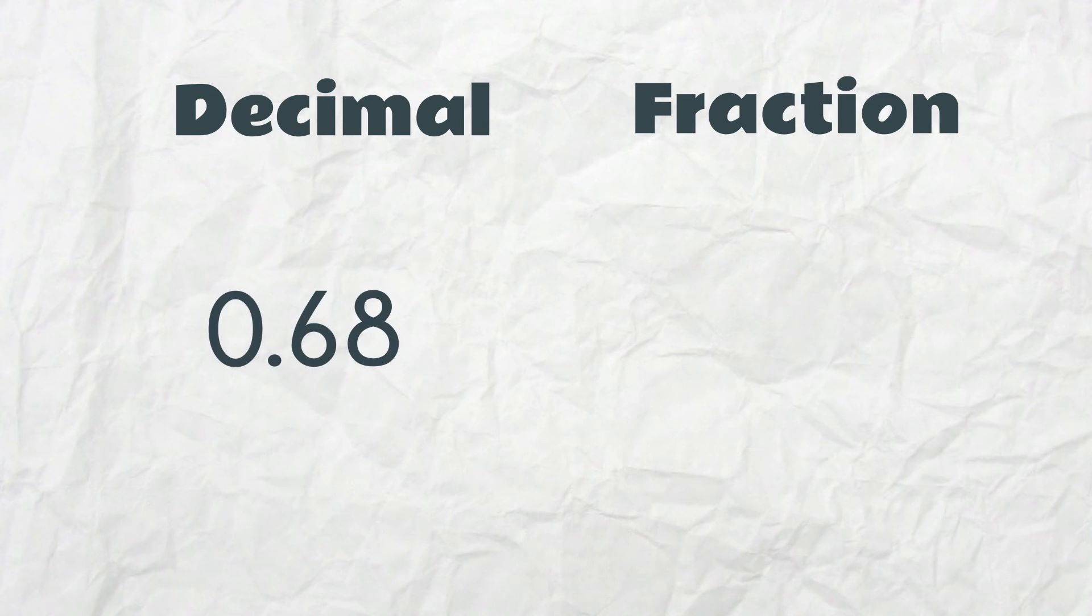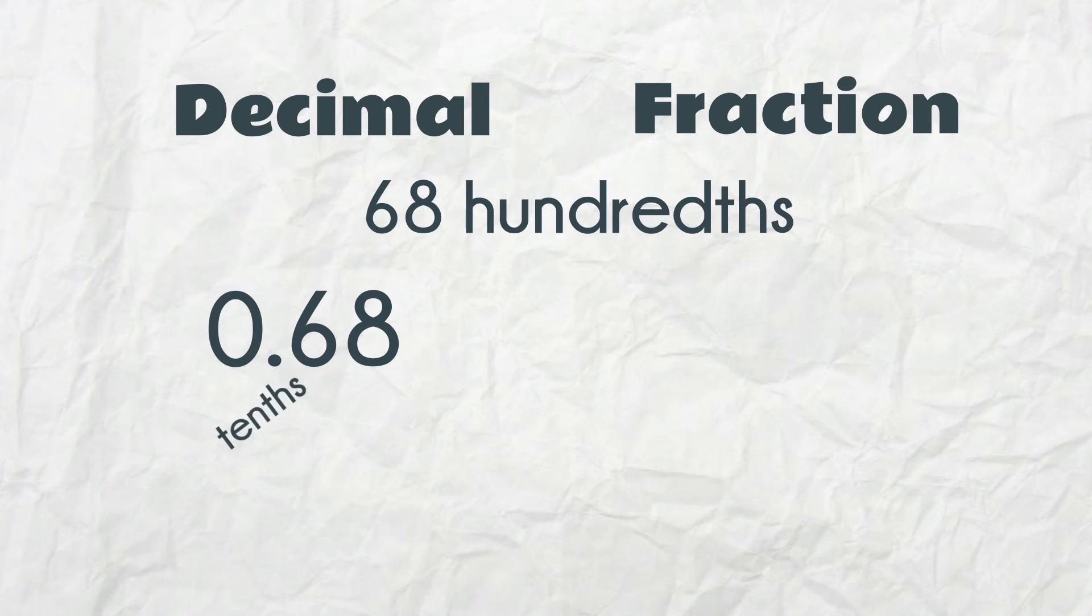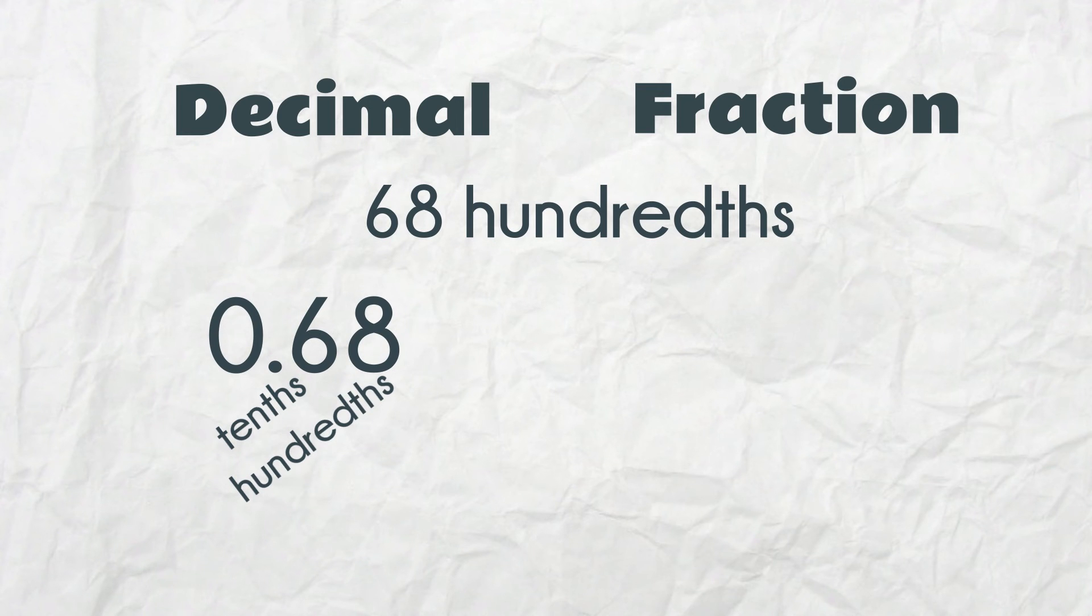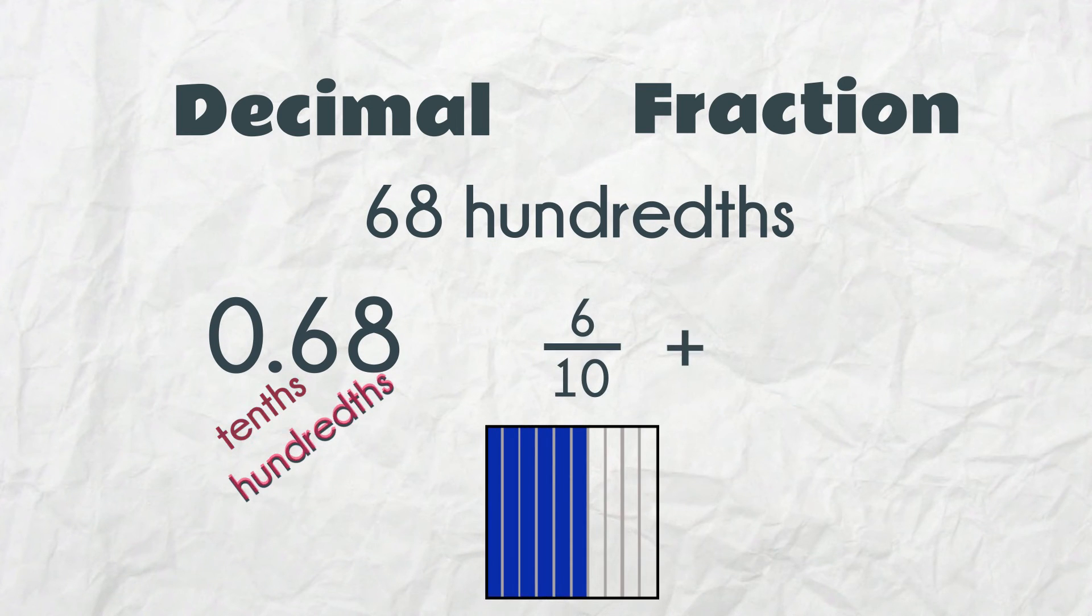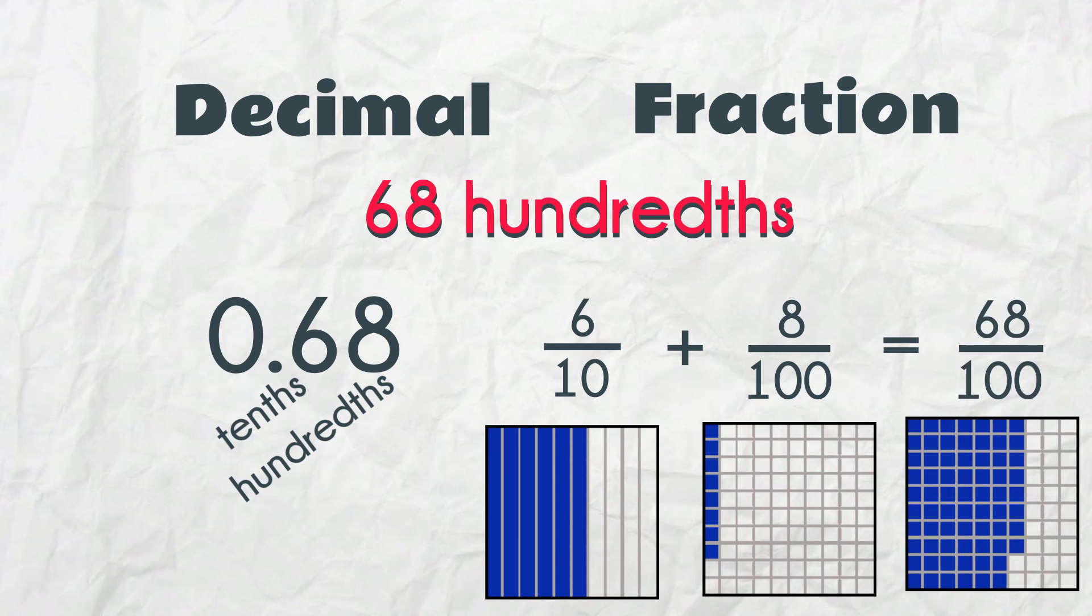Here is another, 0.68. It can be read as 68 hundredths. It has 6 tenths and 8 hundredths. 6 tenths plus 8 hundredths equals 68 hundredths.